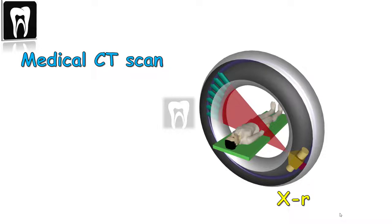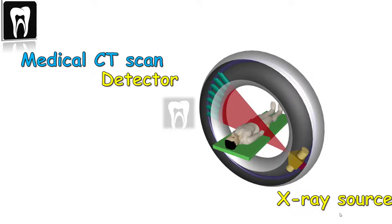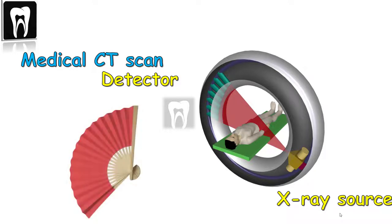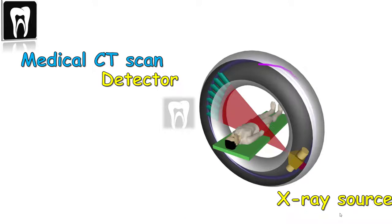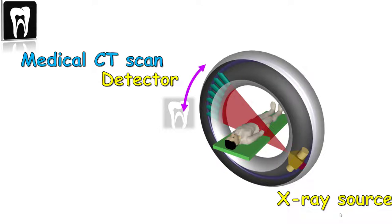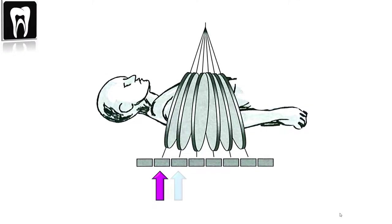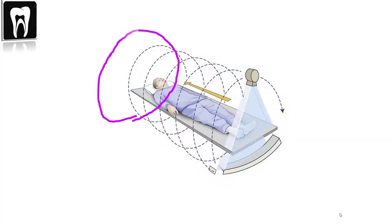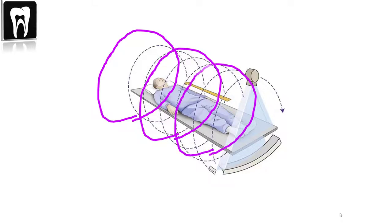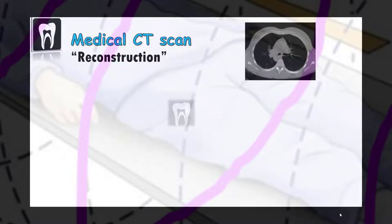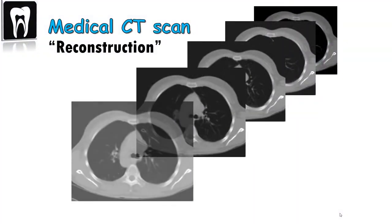Let's see how a CT scan machine works. The device uses an x-ray source and detector to capture multiple images from different angles. The shape of the x-ray beam looks like a fan that rotates, with a thin arc-shaped detector that captures limited-thickness slices. The bed the patient lies on moves inside the machine, and every time the x-ray and detector go around the patient, we get one slice image. Multiple rotations are performed, producing a single axial slice image per scan, which are then reconstructed into a 3D image.